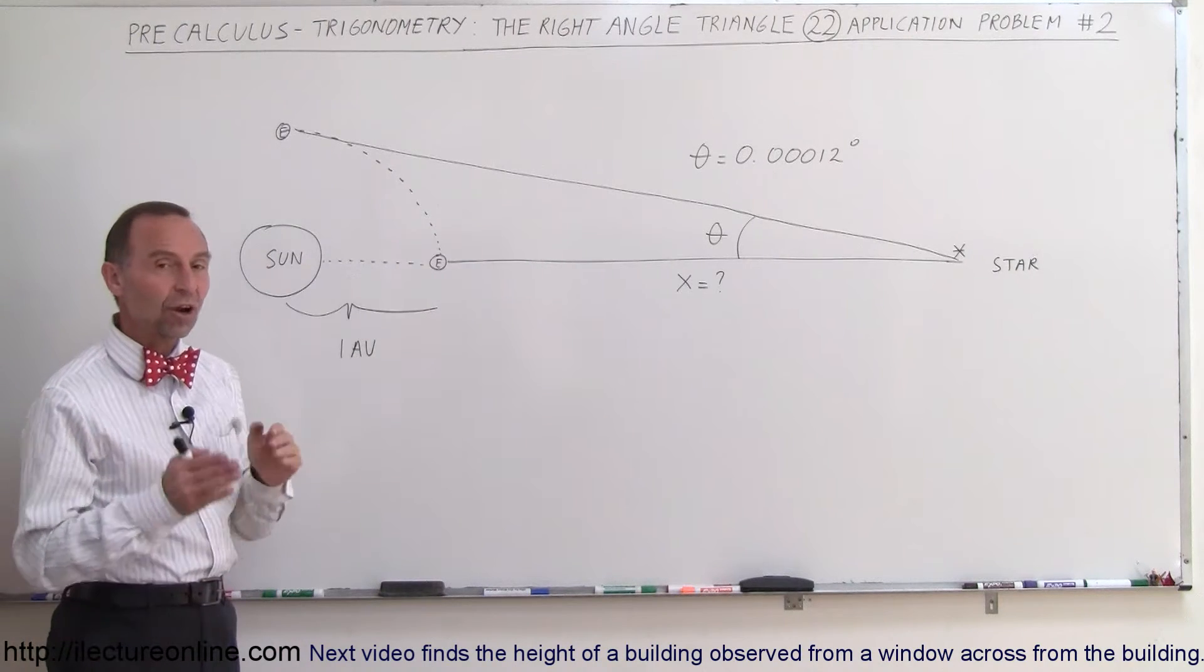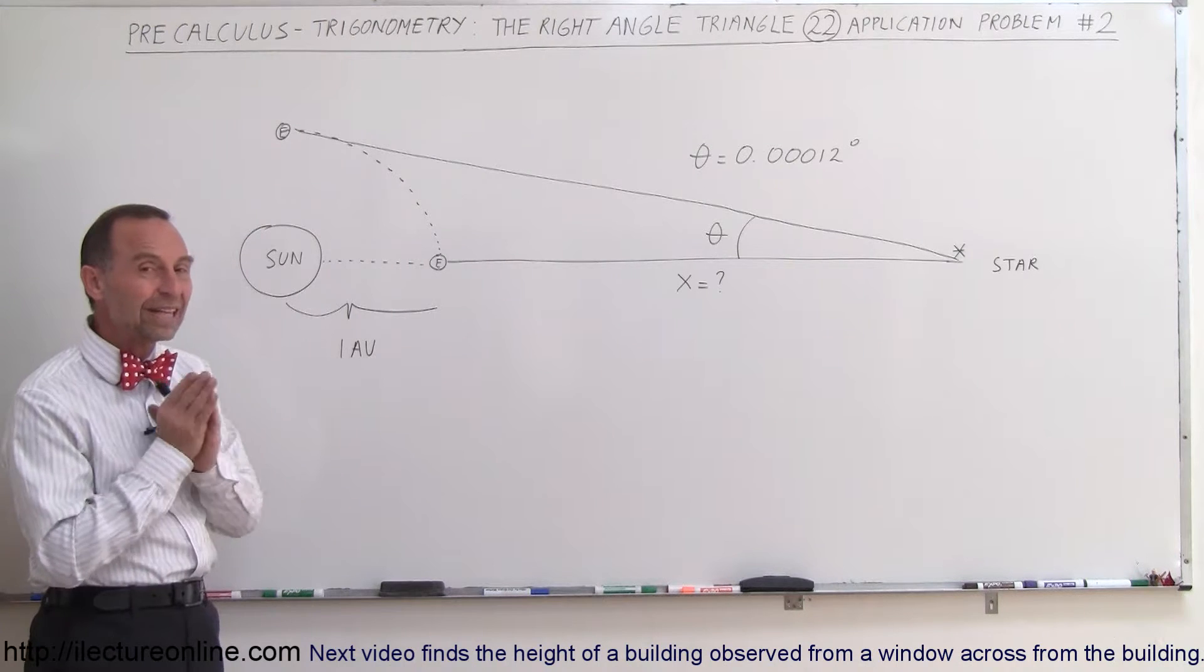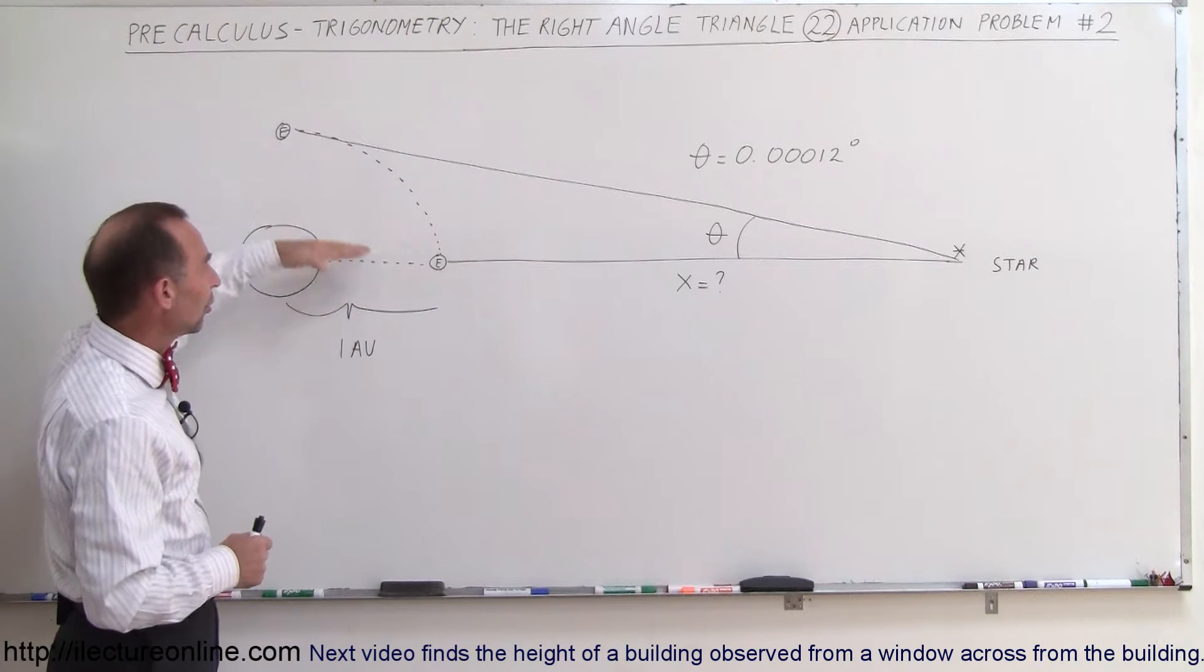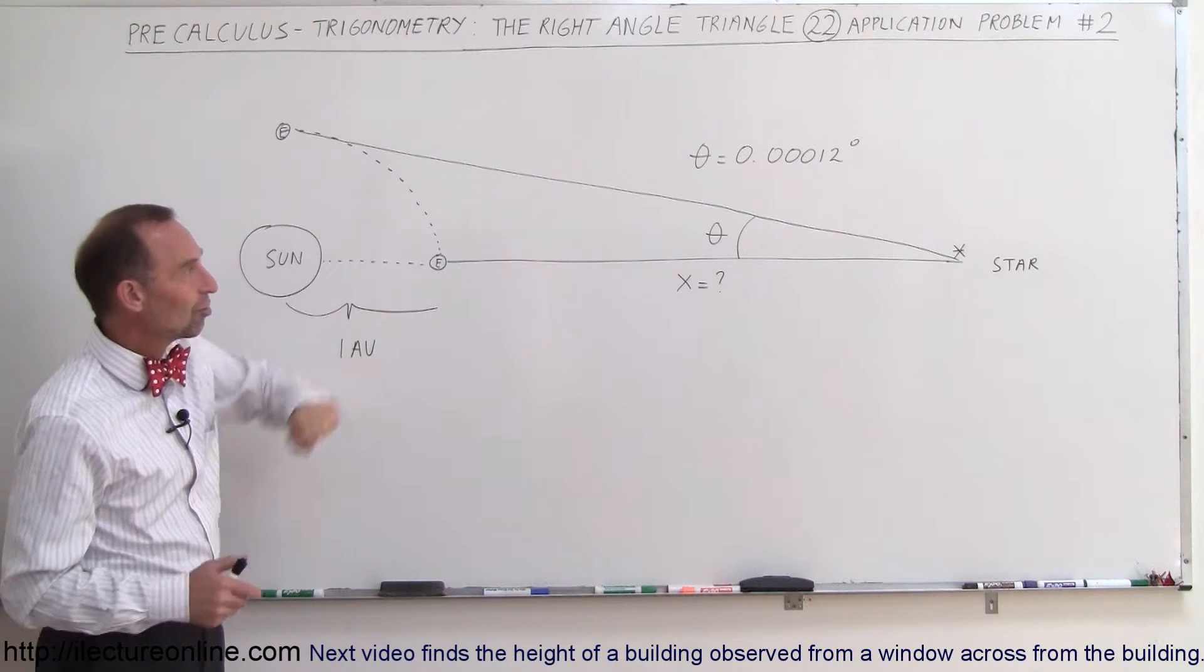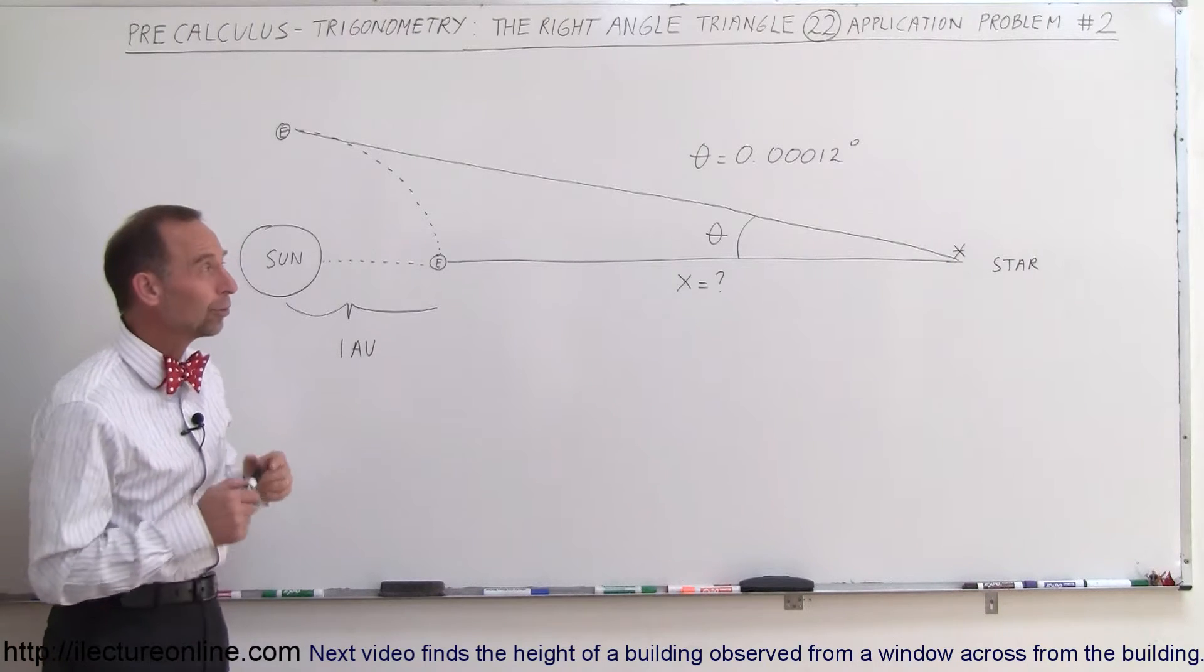And when we measure the position of the star, we notice that there's a slight difference in the angle, so the angle measured from the Earth to the star has changed by 0.00012 degrees.